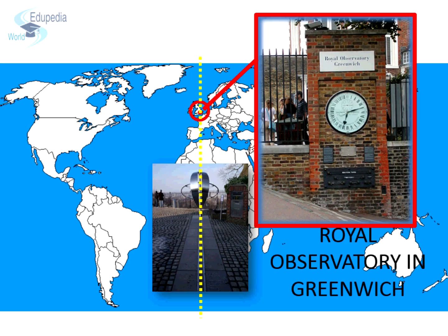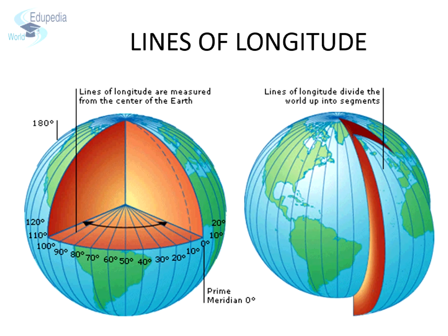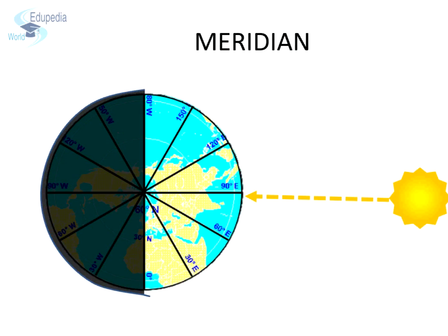Longitudes are imaginary lines that run vertically from the north pole to the south pole. Each longitude is a semicircle. All places with the same longitude fall on a particular line of longitude. As the earth rotates, all these places face the sun at the same time and experience noon at the same time. Lines of longitude are also known as meridians, as the term means the highest position of the sun in the sky, that is, during midday.